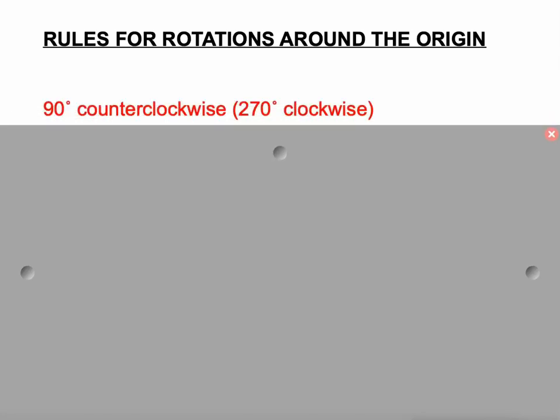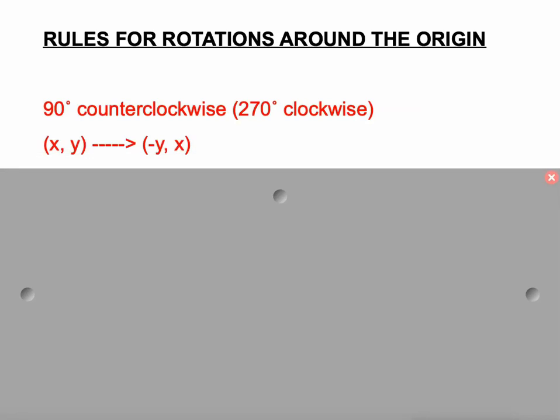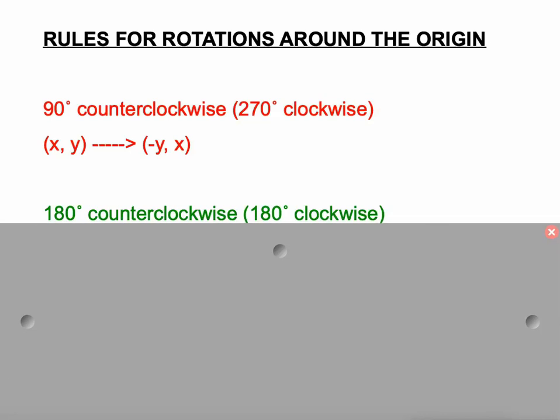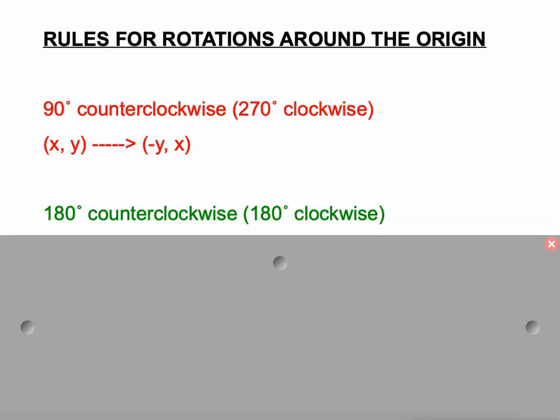Our first rule is a 90 degree counterclockwise rotation, which is equivalent to a 270 degree clockwise rotation. That is where any point in the form XY becomes negative Y, X. It means our new X value is going to be the opposite of our old Y value, and our new Y value is going to be equivalent to our old X value. We'll show it a few times — don't worry if it seems confusing.